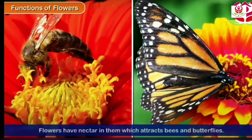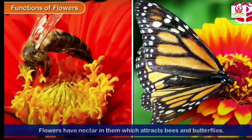Let's see the functions of flowers. Flowers have nectar in them which attracts bees, butterflies, and even birds, which help in pollination. Pollination means the nectar present in the flower sticks to the insects' or birds' legs, and when they fly they carry the nectar with them to other places, through which a new plant grows.